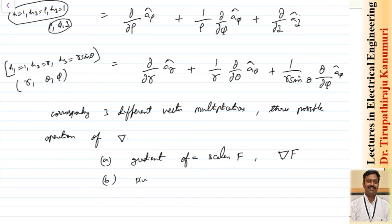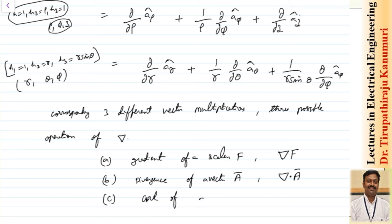The second operation is the divergence of a vector. Let us assume that vector is A. This will be given by del dot A, and the result will be a scalar quantity. The third one is the curl of a vector. Curl is represented as del cross A, and the result will be a vector quantity. We will see each one of them — what is gradient, what is divergence, what is curl, how to calculate them, and their significance — in the next class.